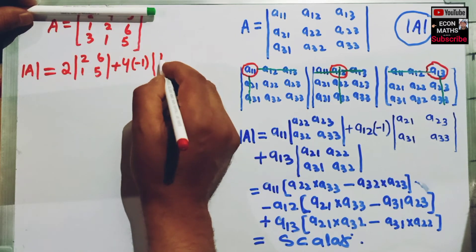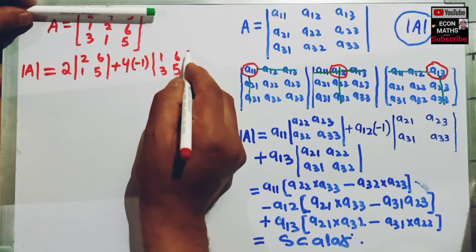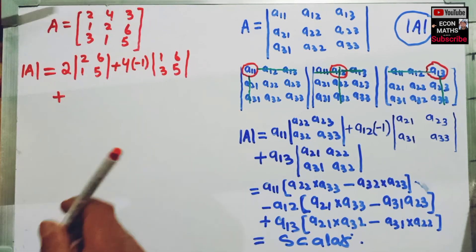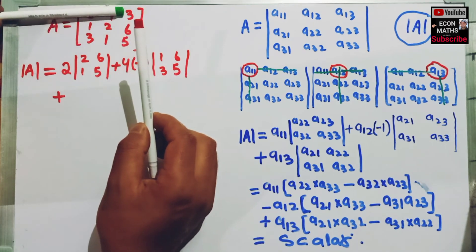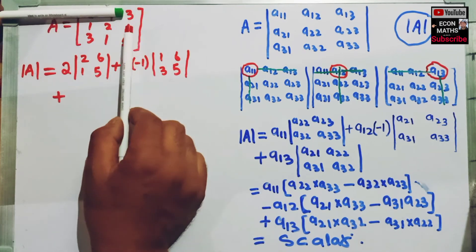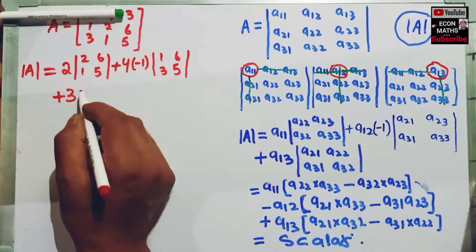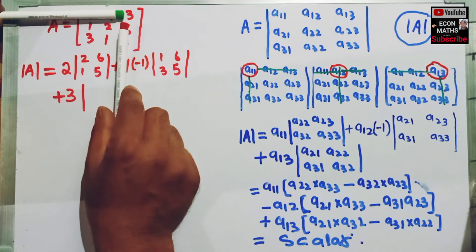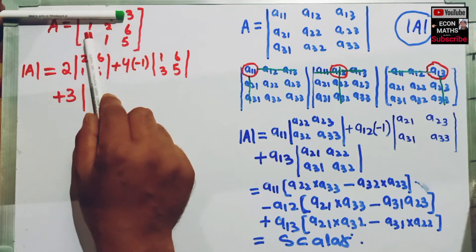I will write 1, 3, 6, 5. Plus, I take the third element, that is 3, and mentally delete the row and the column in which it appears. I write 3 and multiply this 3 by the determinant of the remaining elements. The remaining elements are 1, 2, 3, 1.